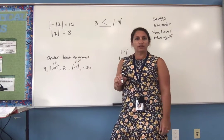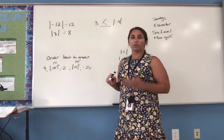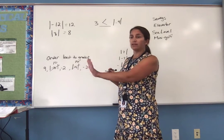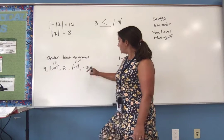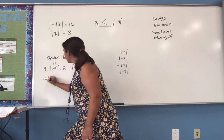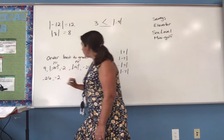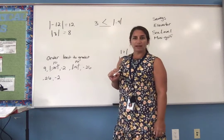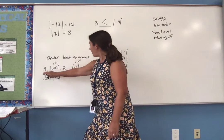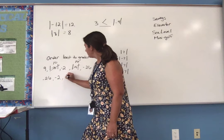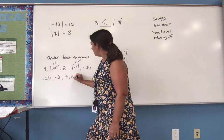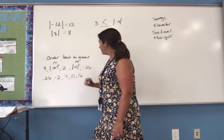Now we have just integers. To write them from least to greatest, you're going to put the most negative ones first on the left. So in this case, I'd have negative 26, then negative 2. Those are all my negative numbers. So now I'm going to go with the positive ones. I have positive 9, and then positive 10, and then positive 16.